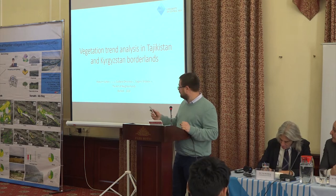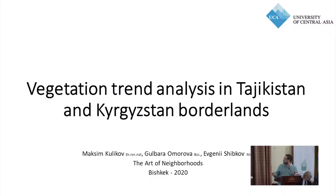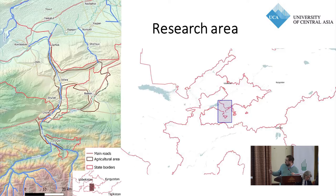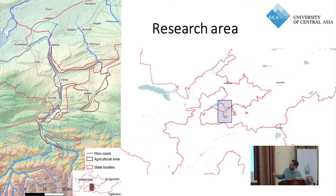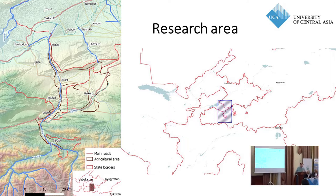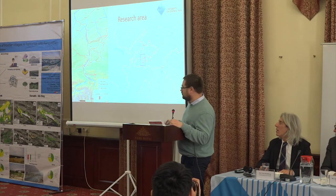We were thinking about vegetation trends and analysis in Tajikistan and Kyrgyzstan borderlands. For our study site, we chose the Isfara region in the south of Kyrgyzstan. Isfara is a transboundary river that starts in Kyrgyzstan and flows through the Tajik exclave Varukh, then back to Kyrgyz area, then to Tajik area, and then to Uzbekistan where it joins the Big Fergana channel and flows through the Tajik Sea water reservoir.